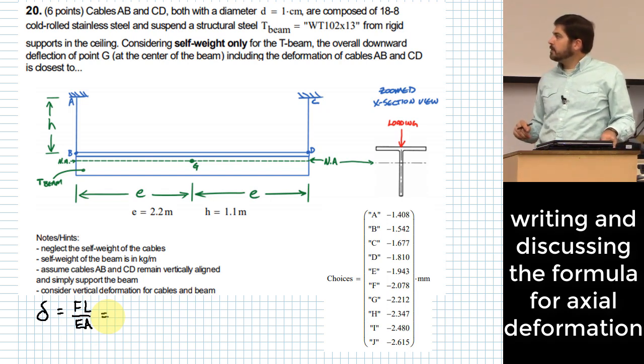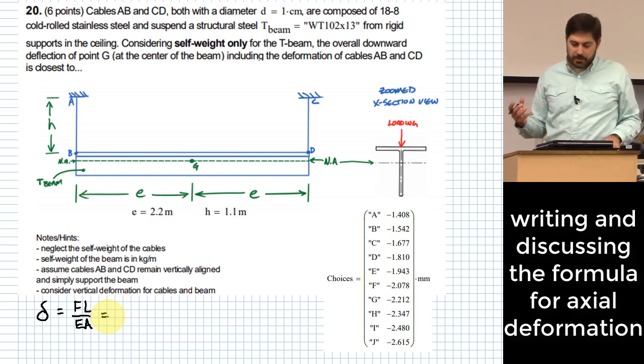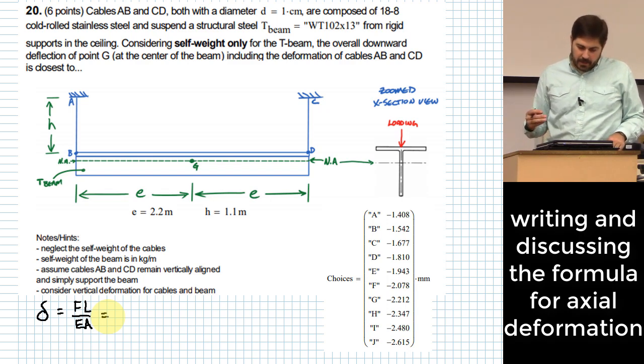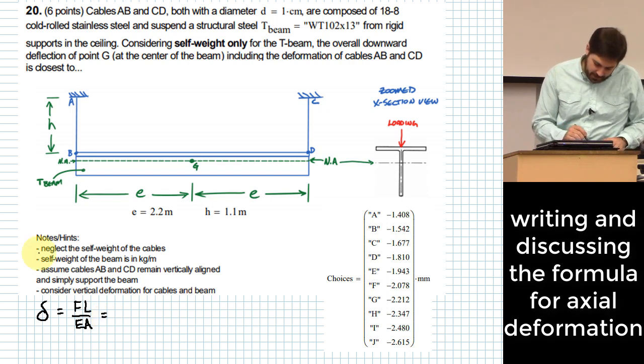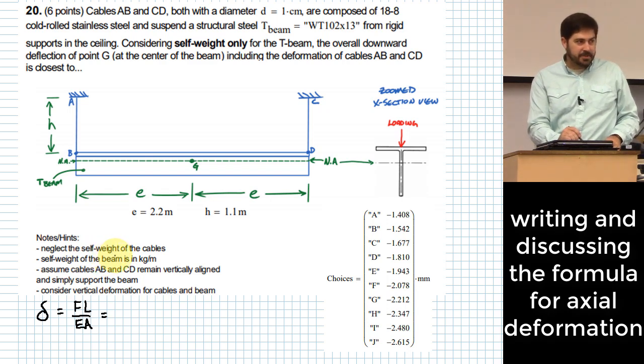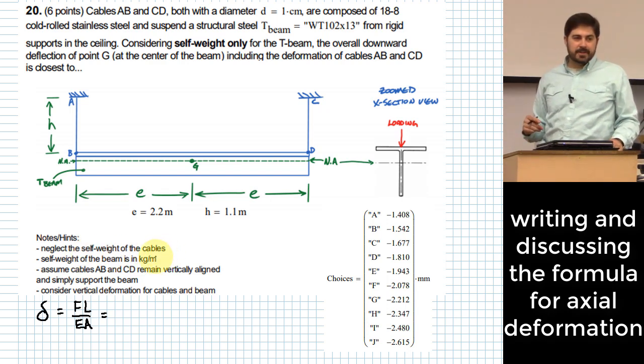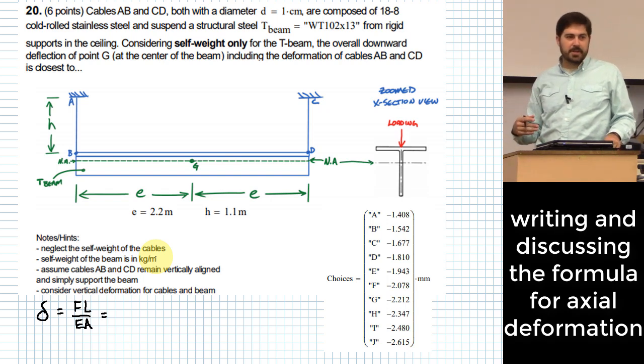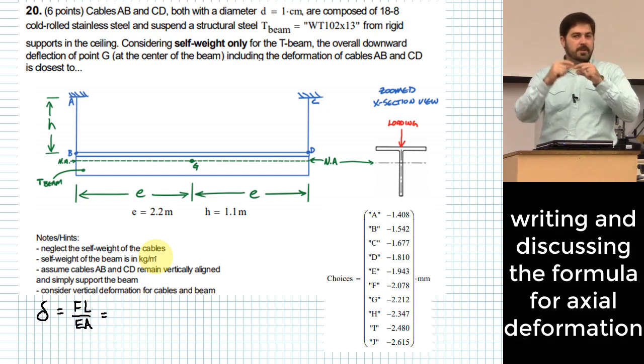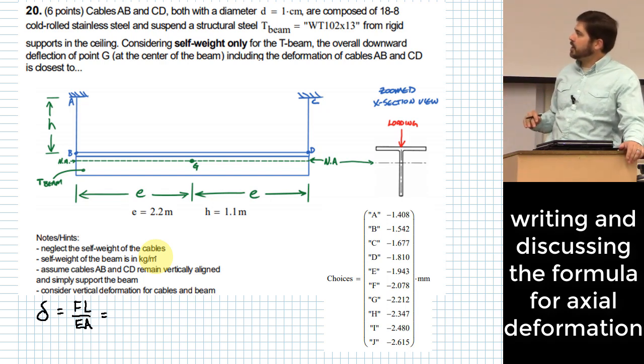it'll be delta equals FL over EA, right? Okay, so that means we need to know F, right? But L, I think, is just given directly. E and A are things that, you know, E is something we're going to have to look up out of a table, and then how do we deal with A? Okay, A is going to be for the cross-sectional area. Now, I'll go ahead and say here that it actually says in the notes down here, we are going to neglect the self-weight of the cables. Those are going to be pretty light relative to the weight of the beam. If you didn't do that, you would actually have to do kind of an integral form of this FL over EA in order to deal with the fact that you have more and more force as you move down the length because the weight would add up, basically, as you went down the length. But it says we can neglect that, which makes our job a little bit easier.